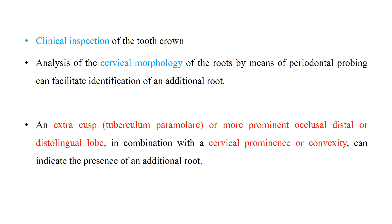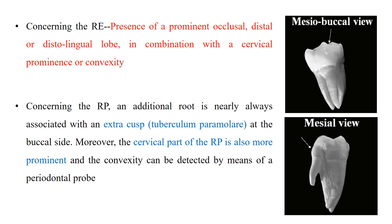An extra cusp — tuberculum paramolar — or a prominent occlusal distal or distolingual lobe combined with cervical prominence or convexity can indicate an additional root. For radix entomolaris, look for prominent occlusal distal or distolingual lobe with cervical prominence. For radix paramolaris, the additional root is always associated with tuberculum paramolar on the buccal side, and the cervical part is also more prominent.